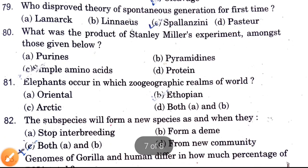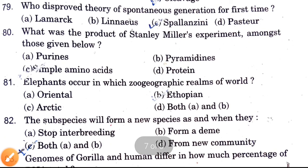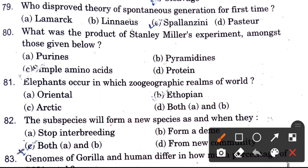Which disapproved the theory of spontaneous generation first? Options are Lamarck, Linus, Spallanzani, and Pasteur. The answer is Spallanzani.